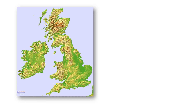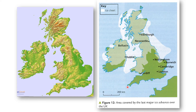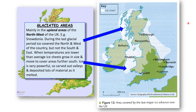Now let's move on to the glaciated areas of the UK. We know that the upland areas are shown as the brown areas on the map, and they correspond very well with the white area showing regions covered in ice 10,000 years ago during the last ice age. So the areas that were covered in ice are generally speaking the upland areas of the UK.